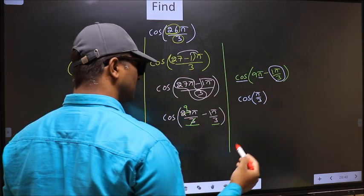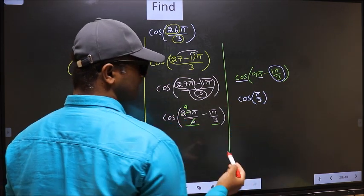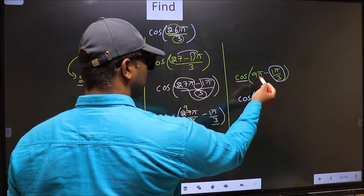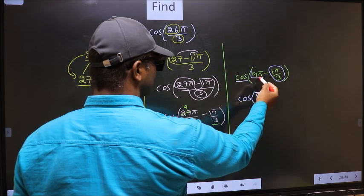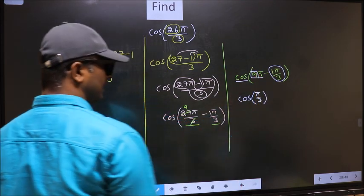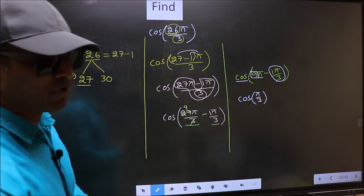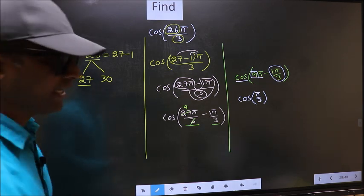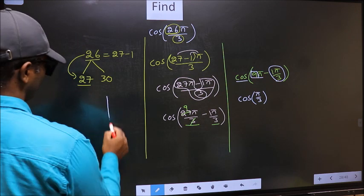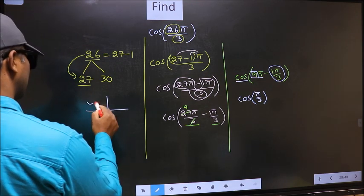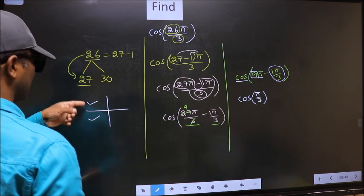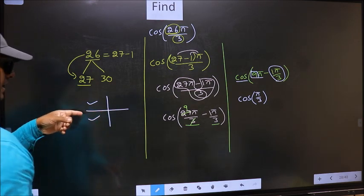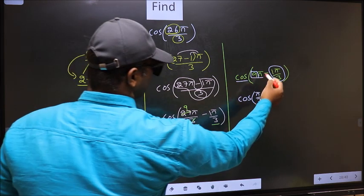Now the question is, will we get here plus or minus? To answer that, you should look at the number before π, which is 9. And 9 is odd. And all the odd multiples of π, they lie in the second or in the third quadrant. Now to decide which quadrant does it lie, we should look at this symbol.